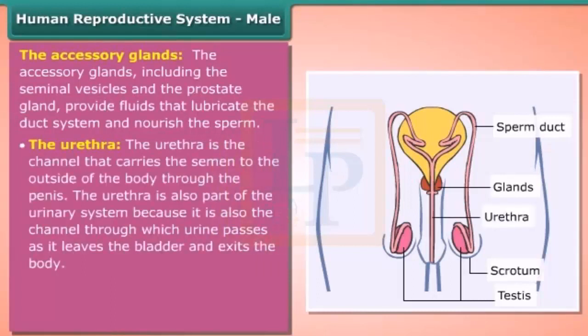The urethra is the channel that carries semen to the outside of the body through the penis. The urethra is also part of the urinary system, as it is the channel through which urine passes as it leaves the bladder and exits the body.